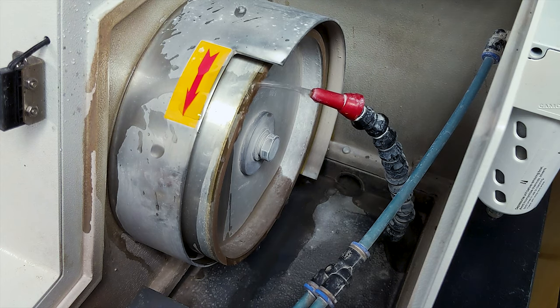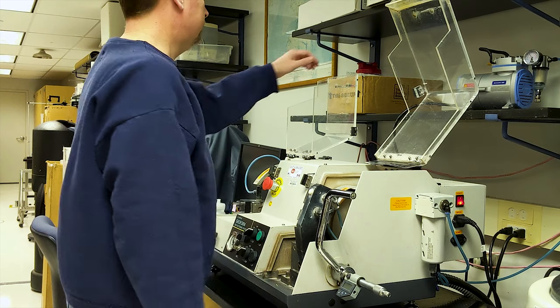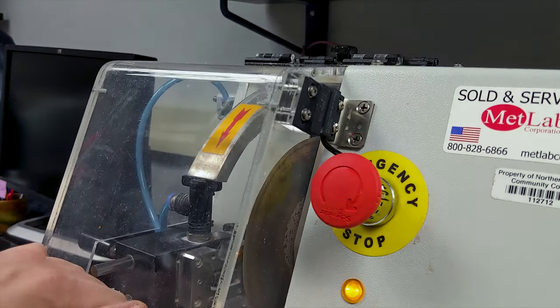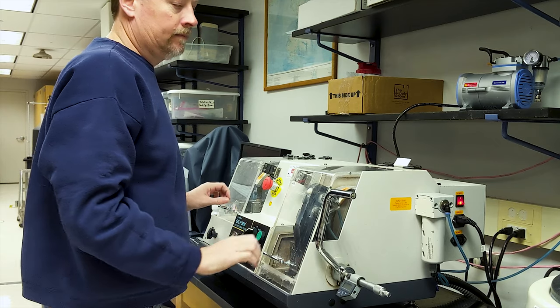Turn on the water, and when we're ready to begin cutting or grinding, both splash guards must be lowered before the cutting and grinding motor can be activated. A magnetic safety switch on both guards must be aligned for the motor to work.